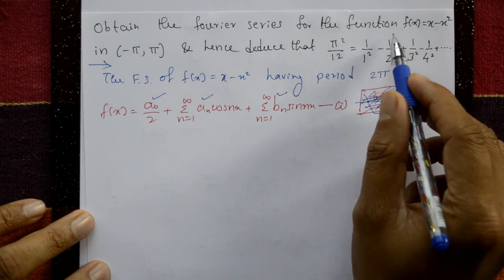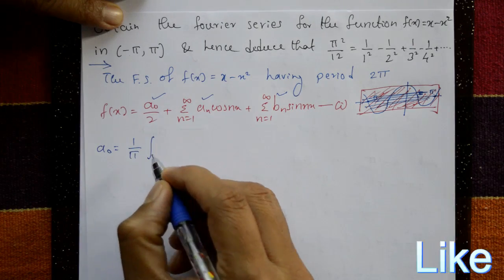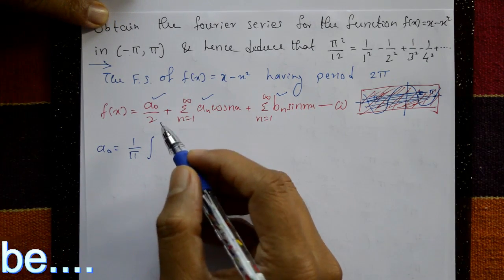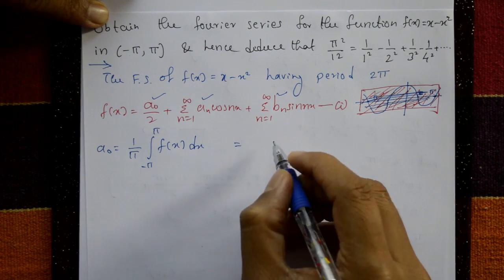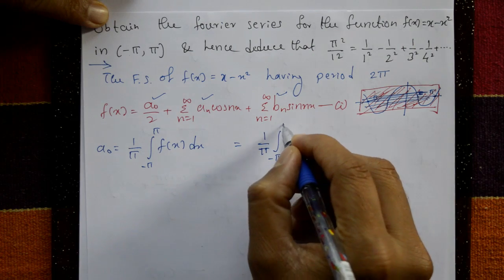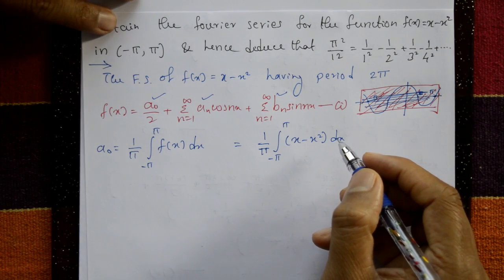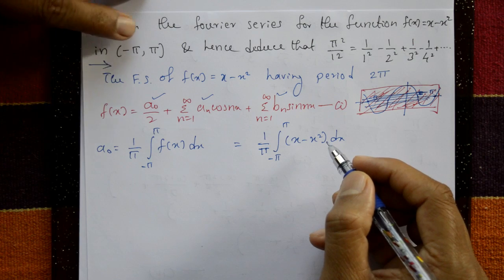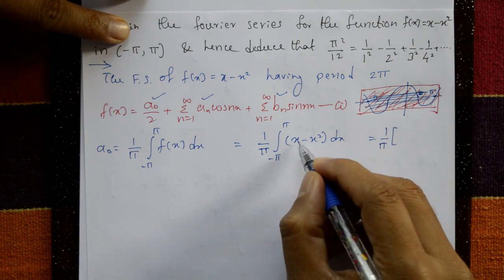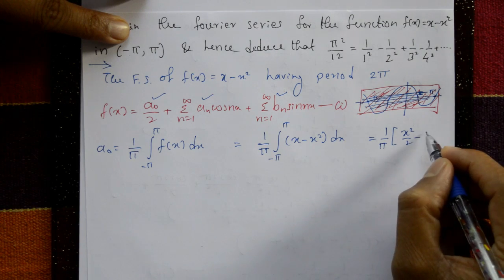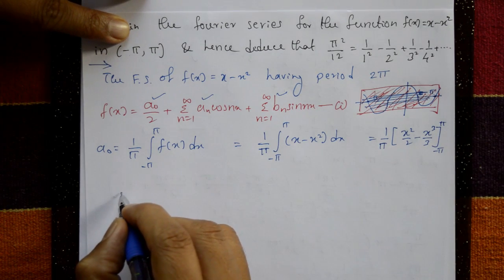First, a₀ is equal to (1/π) times the integral from -π to +π of f(x) dx. This equals (1/π) times the integral from -π to +π of (x - x²) dx. Integrating: x²/2 - x³/3, with limits -π to +π.